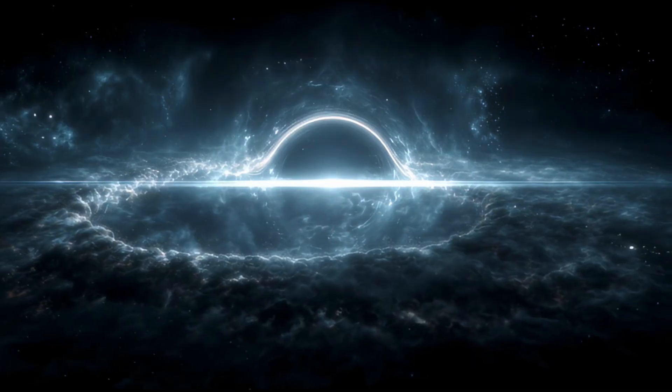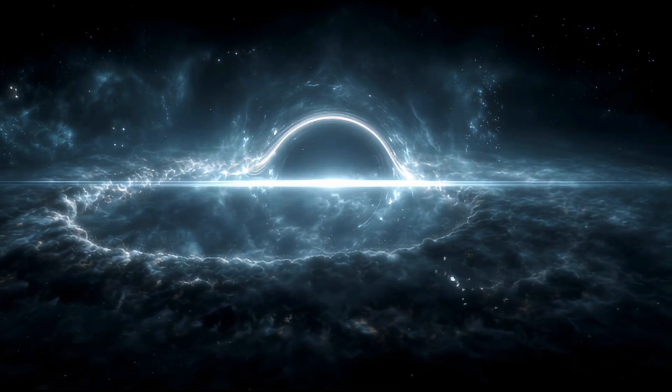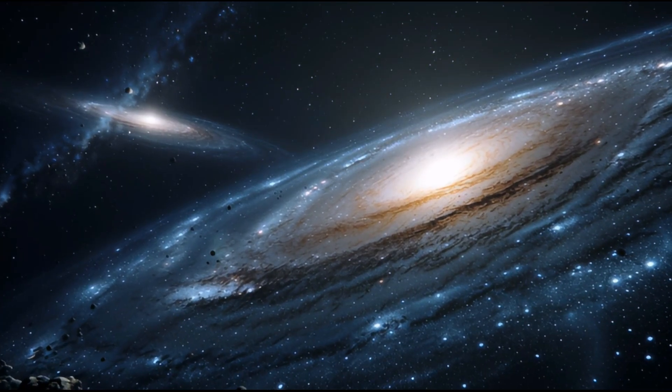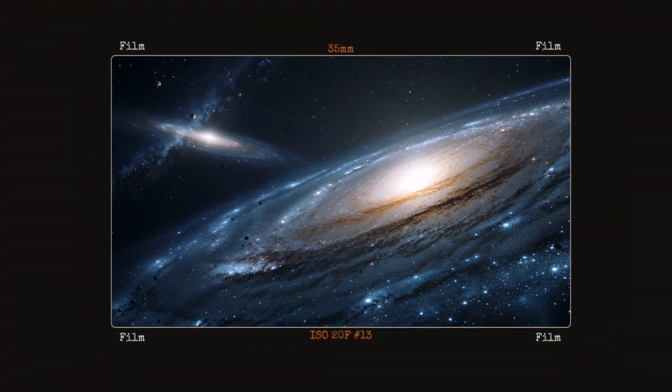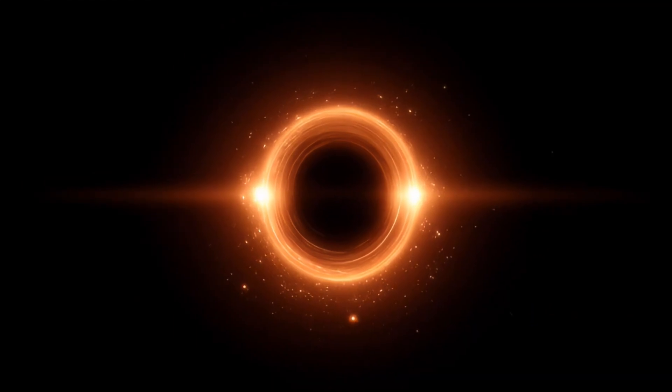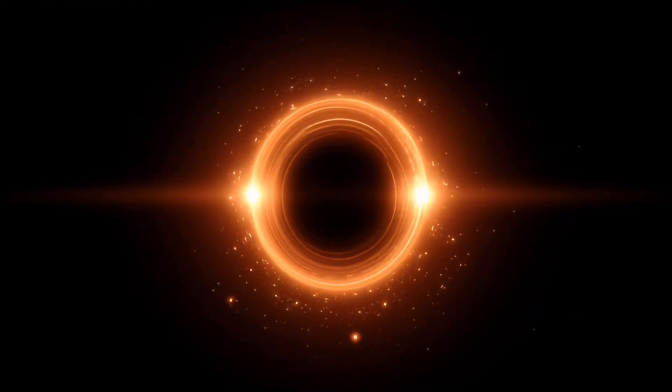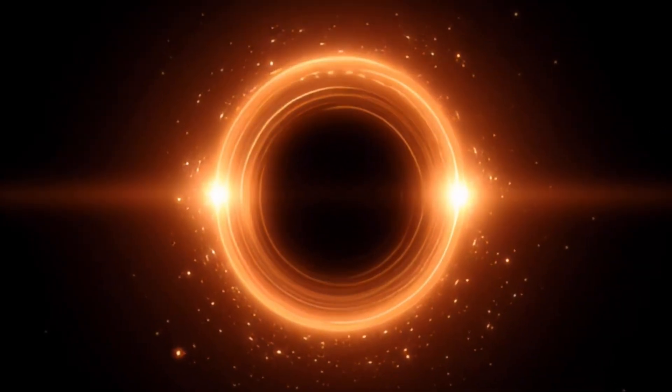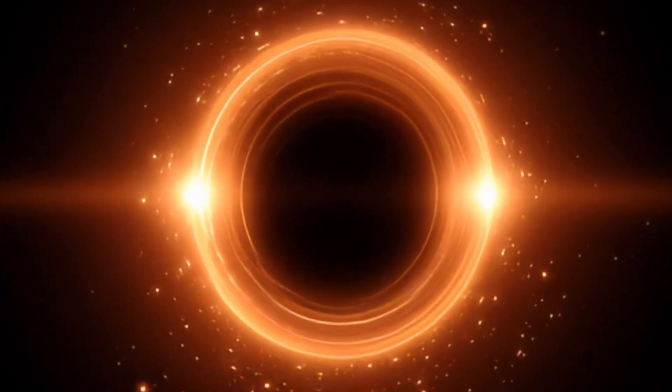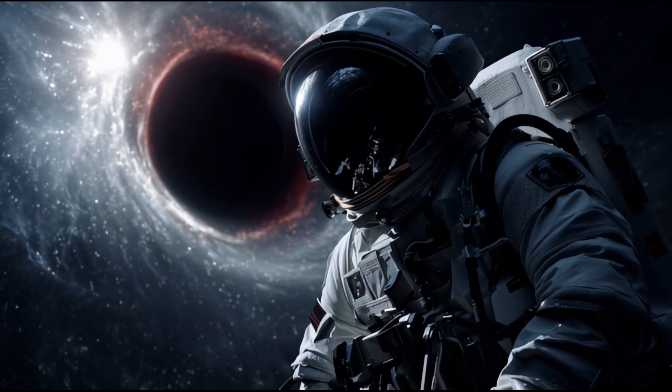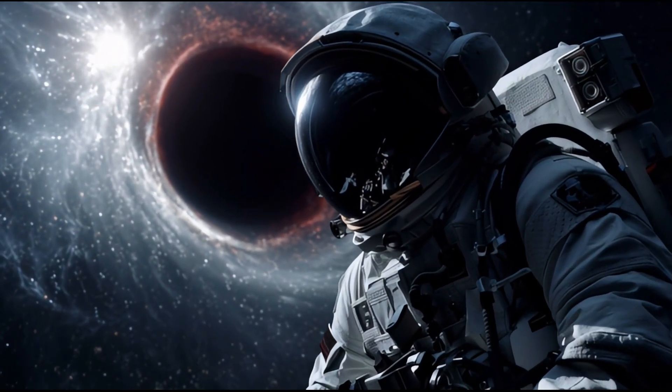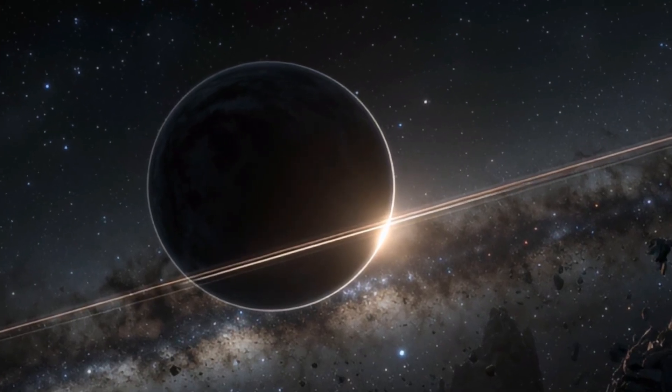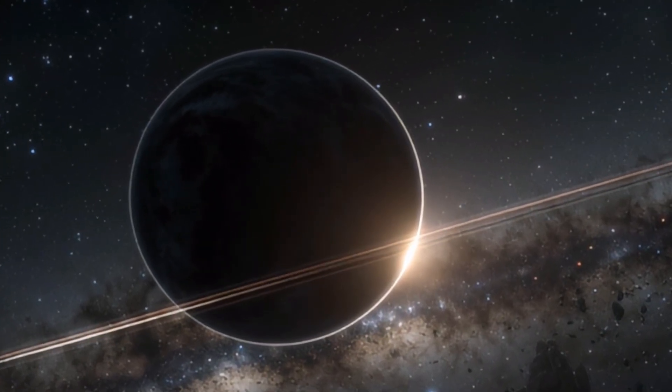Let's contemplate the ultimate fate of black holes. Through Hawking radiation, black holes slowly evaporate, with smaller ones evaporating faster than larger ones. A solar mass black hole would take approximately 10 to the power of 67 years to evaporate. That's a 1 followed by 67 zeros, a timescale so vast it defies comprehension. The largest supermassive black holes could persist for 10 to the power of 100 years or more.